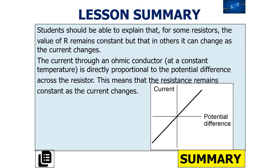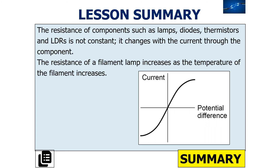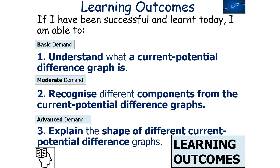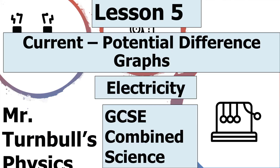In summary: for some resistors the value of R remains constant, while in others it changes as current changes. The current through an ohmic conductor at constant temperature is directly proportional to the potential difference across it, so resistance remains constant. Components such as lamps, diodes, thermistors, and LDRs do not have constant resistance — it changes with current. The resistance of a filament lamp increases as temperature increases, whilst current through a diode flows in one direction only and the diode has very high resistance in the reverse direction.